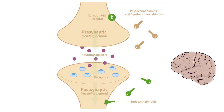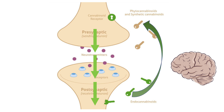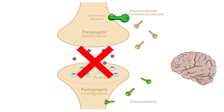Depending on the conditions, the receiving neuron may want to stop or slow down the signal it receives. This is where the endocannabinoid system comes into play. If the signal needs to be adjusted, the receiving neuron produces endocannabinoids, represented by the green keys. The endocannabinoids move backward and, like a key and a lock, fit into the cannabinoid receptor in the sending neuron. This causes a chain reaction which tells the sending neuron to stop signaling. Too much of one signal can cause a neuron to be overactive, and too little can cause it to be underactive. The ECS helps to maintain the perfect balance.